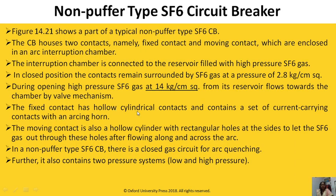The fixed contact has a hollow cylinder design and contains a set of current-carrying contacts with an arcing horn. The moving contact is also a hollow cylinder with rectangular holes at the sides to let the SF6 gas out through these holes after flowing along and across the arc. In the non-puffer type SF6 circuit breaker there is a closed gas circuit for arc quenching. It also contains two pressure systems: low pressure at 2.1 kg/cm² and high pressure at 14 kg/cm².